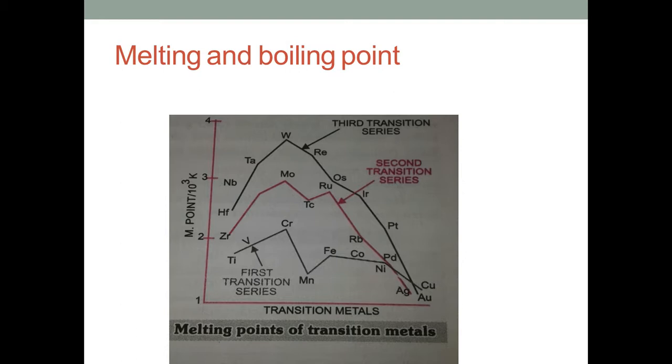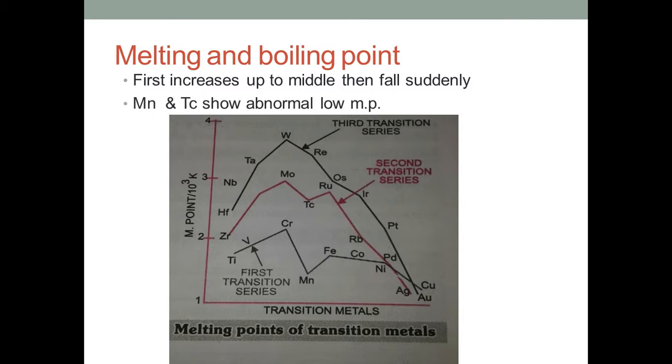This graph shows variations of melting and boiling points for 3d, 4d, and 5d series. What we conclude from this graph is that if you move from left to right inside a particular series, melting point suddenly increases at the middle. The logic for this sudden increase in melting point is the degree of atomization or enthalpy of atomization. The enthalpy of atomization for these three elements in the middle of the series is maximum.